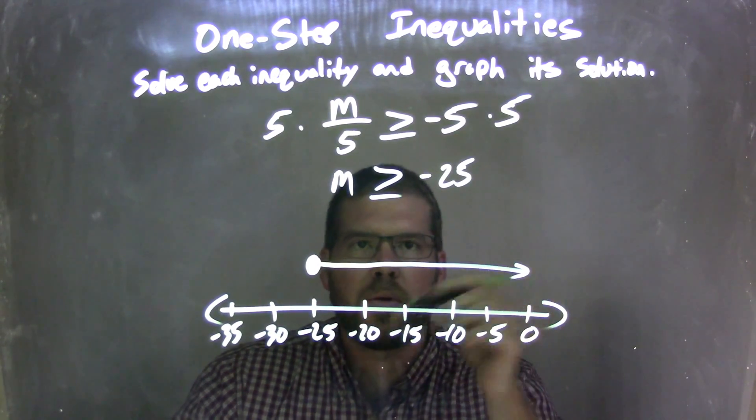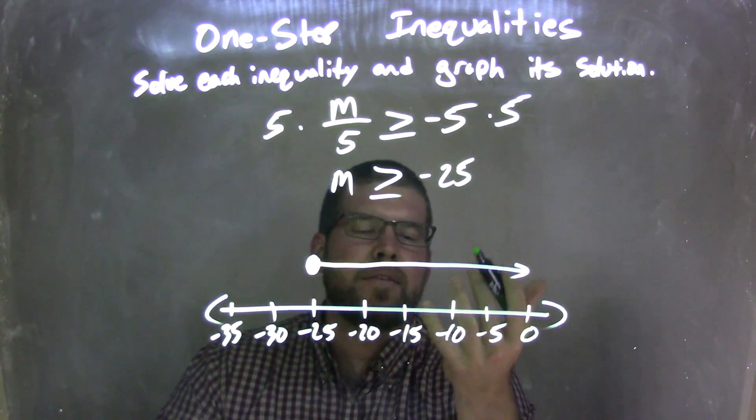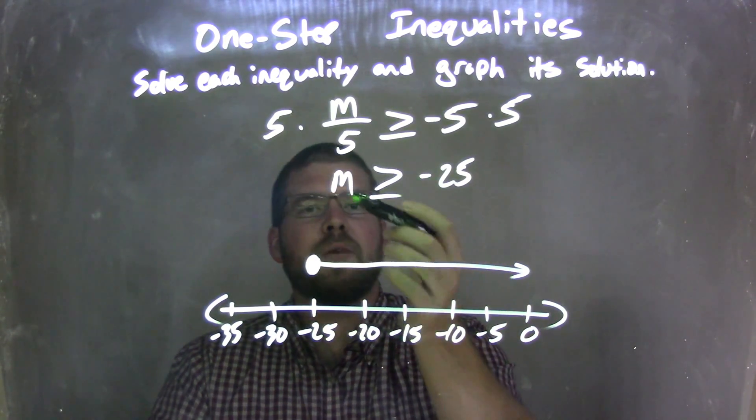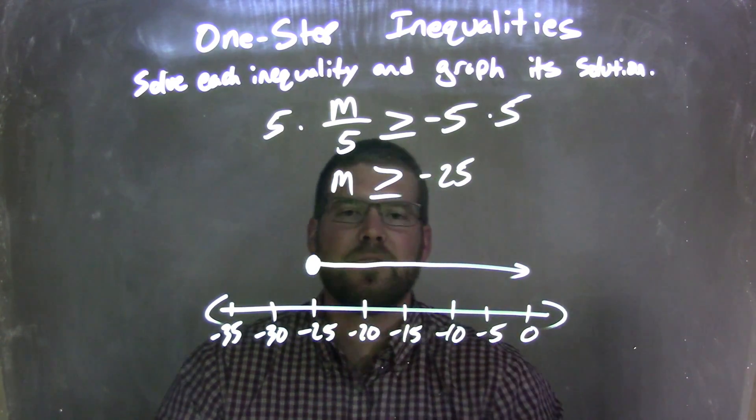Let's give a little check there. So this graph represents our answer here, because m is greater than or equal to negative 25.